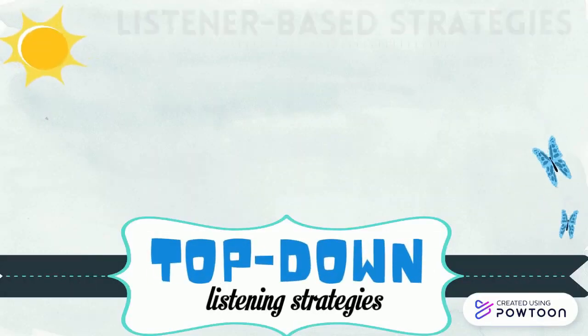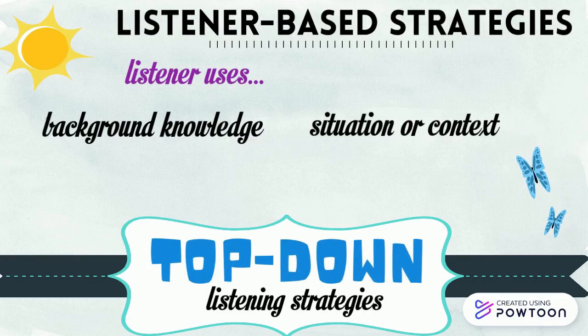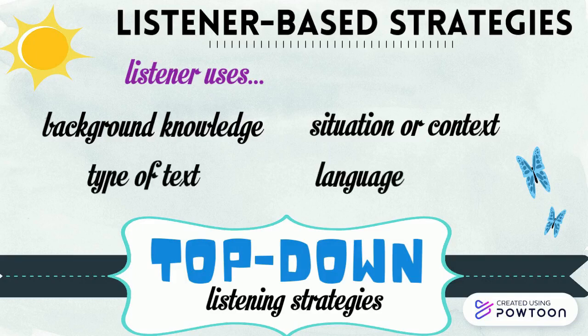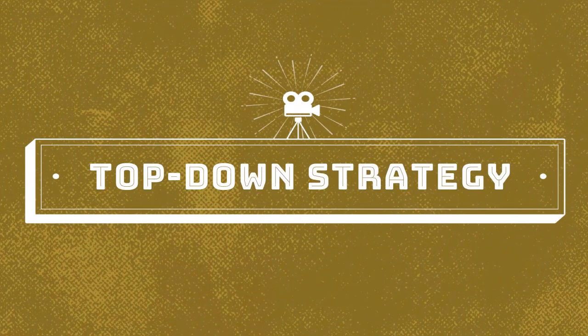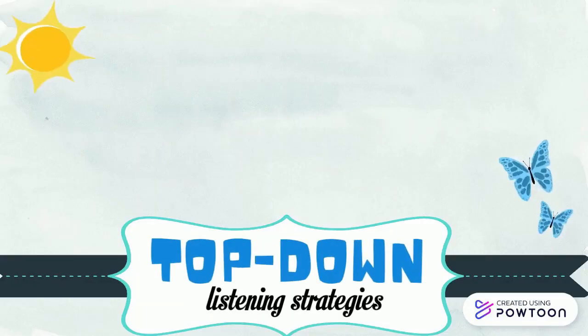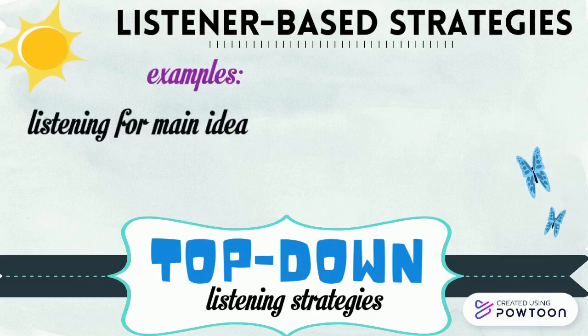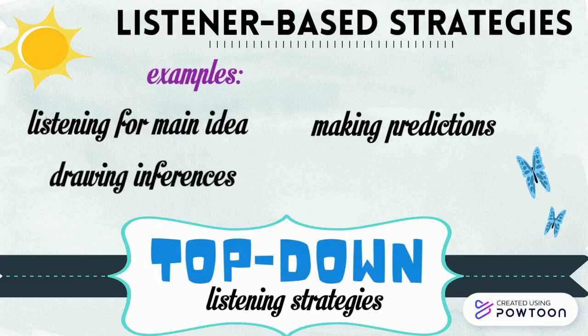Top-down listening strategies are considered listener-based strategies. In these strategies, the listener uses background knowledge of the topic, the situation or context, the type of the text, and the language to make sense of what he or she is listening to. This means that the listener already knows a fair amount of information about the topic and is able to relate the story or information to a previously established schema or prior knowledge. Examples of top-down listening strategies are listening for main idea, making predictions, drawing inferences, and summarizing.